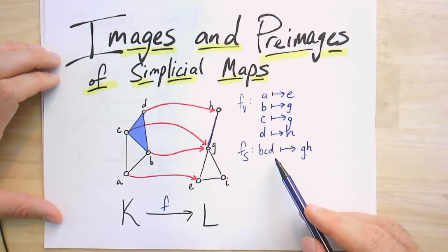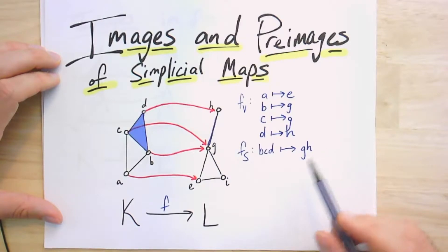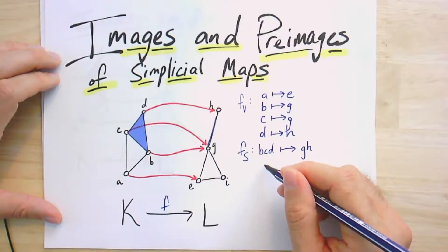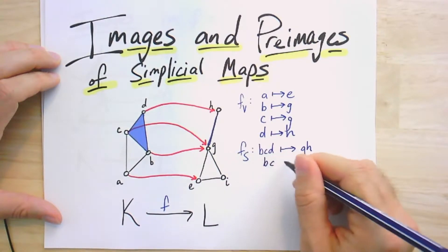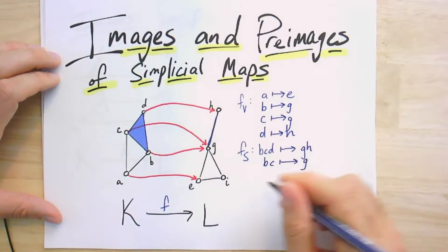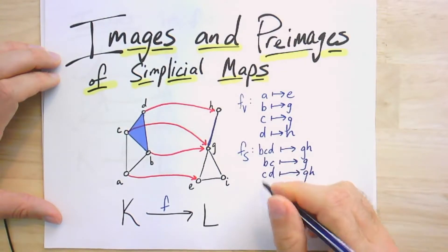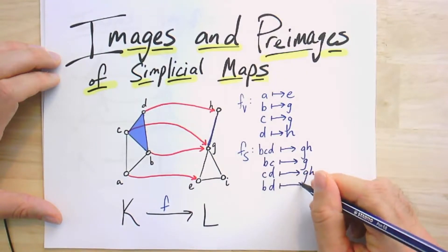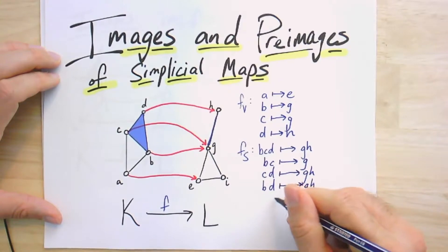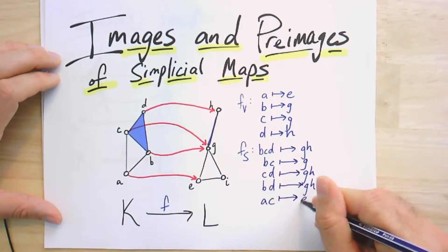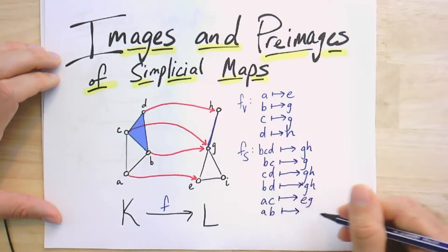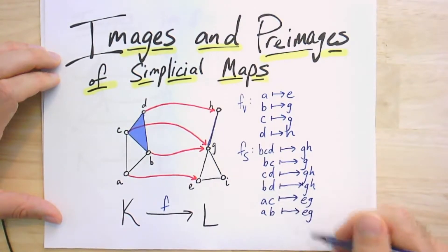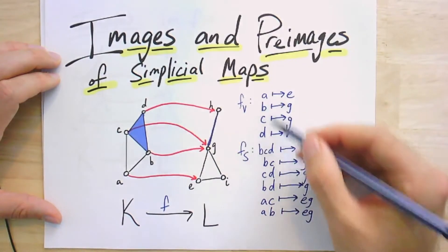Now looking at the edges: BC maps to just the vertex G. CD maps to GH. BD maps also to GH. AC maps to EG, and AB maps to EG. Remember, these are not ordered — vertices are also simplices in the sense that a set containing only one vertex is also a simplex, but we know what those are, so the remaining mappings are just A to E, B to G, C to G, D to H, and the empty simplex always maps to the empty simplex.